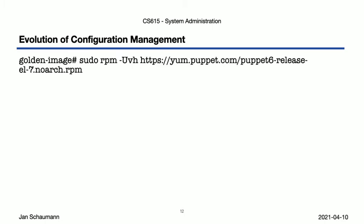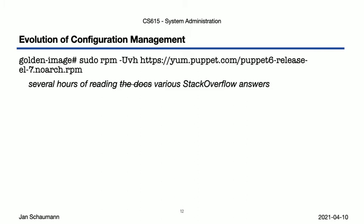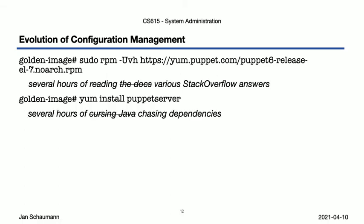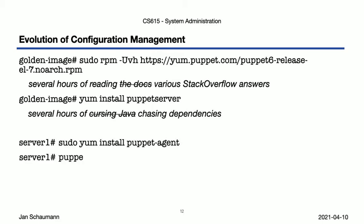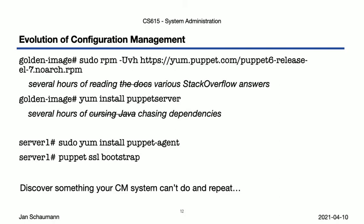Eventually you've had enough and you switch to using an actual configuration management system, such as Puppet. But of course then you have to spend a fair bit of time actually understanding how to set up your servers, install the service — not without cursing Java once more — and configuring the client side as well. And now everything is peachy and all your files are synced, until you inevitably run into some edge condition that the CM system doesn't solve and you go back to step 1 copying files around.